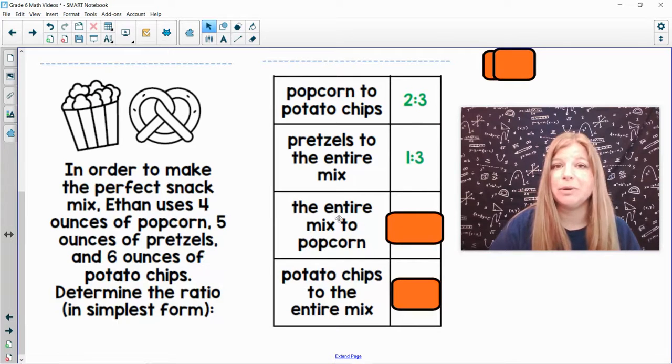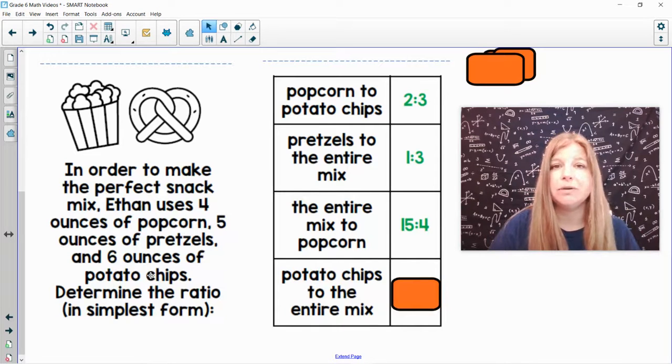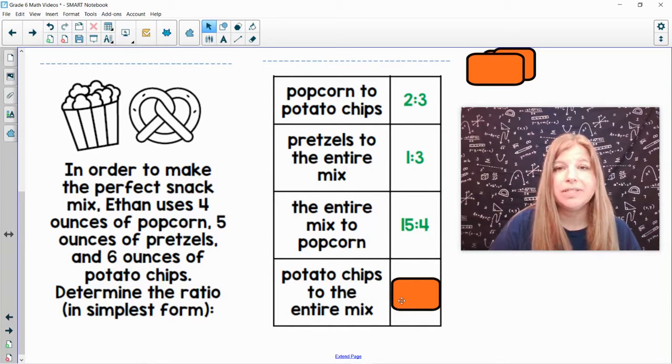The entire mix, which we know is 15, to popcorn. So the entire mix we know is 15. Popcorn is four. Fifteen to four. Can I divide 15 and four by the same number? Nope. And so my ratio is just 15 to four. Potato chips to the entire mix. There are six ounces of potato chips, six to 15. Six and 15 are both divisible by three, and if I divide both by three, I get two to five.